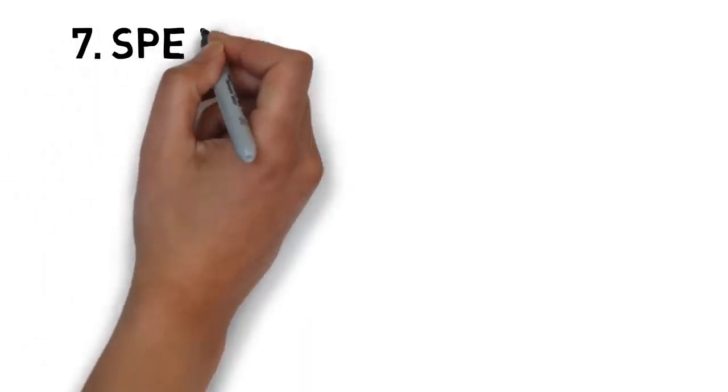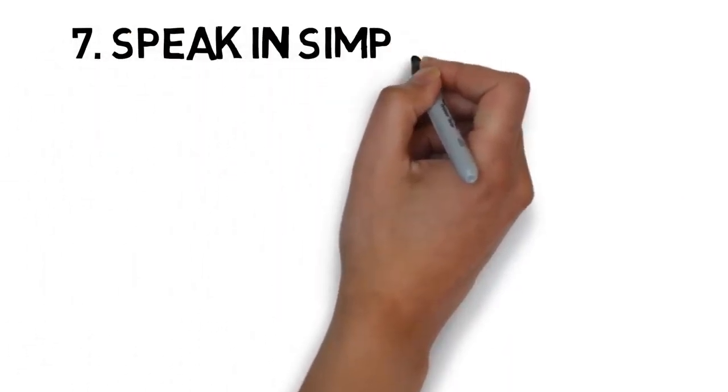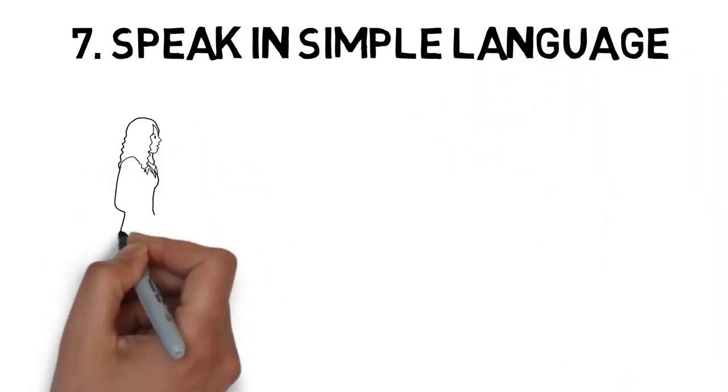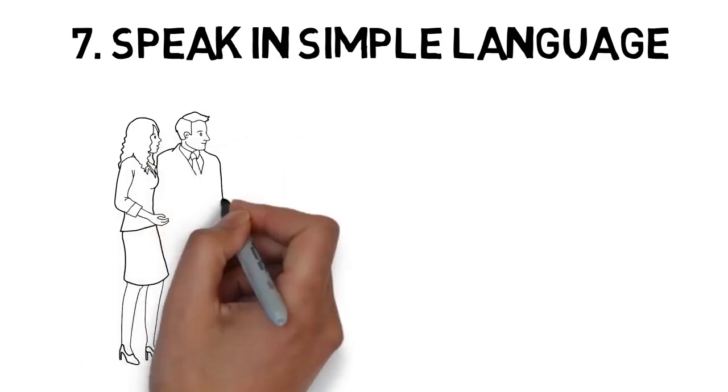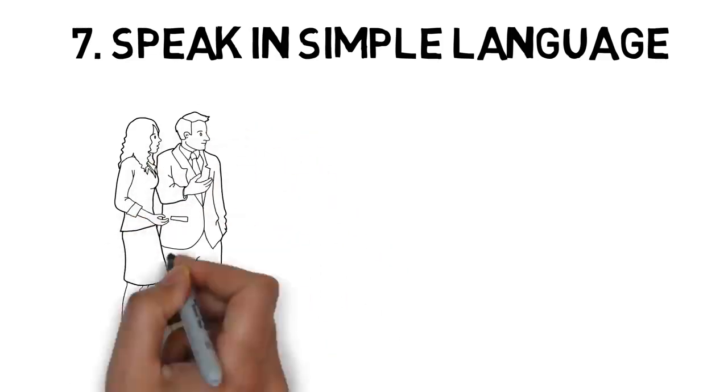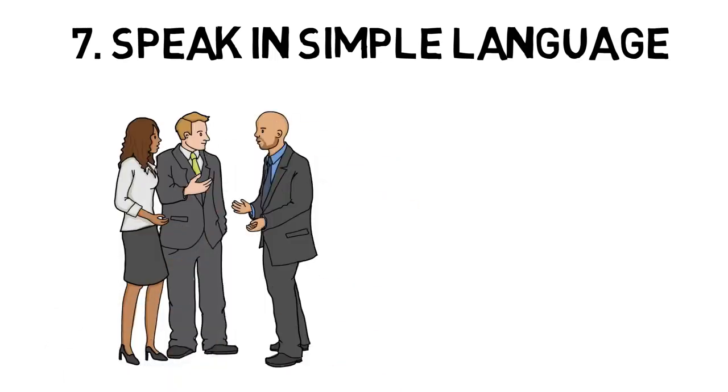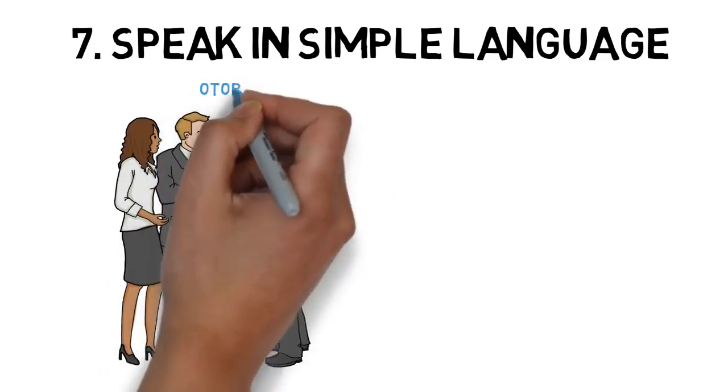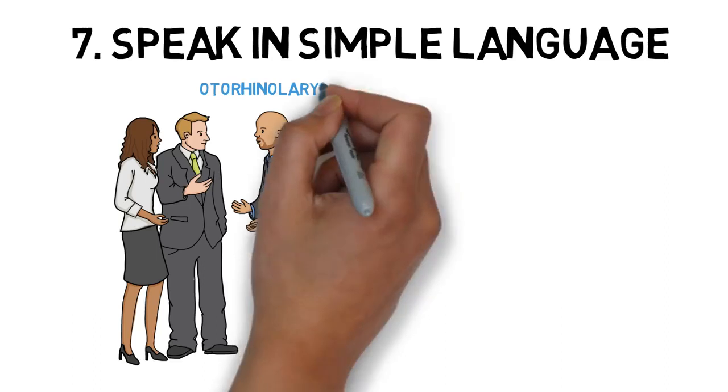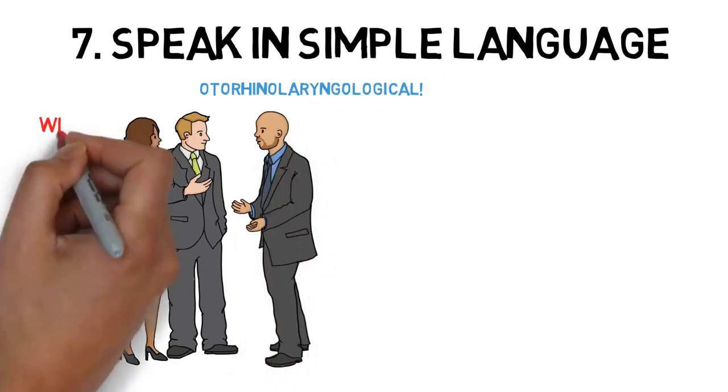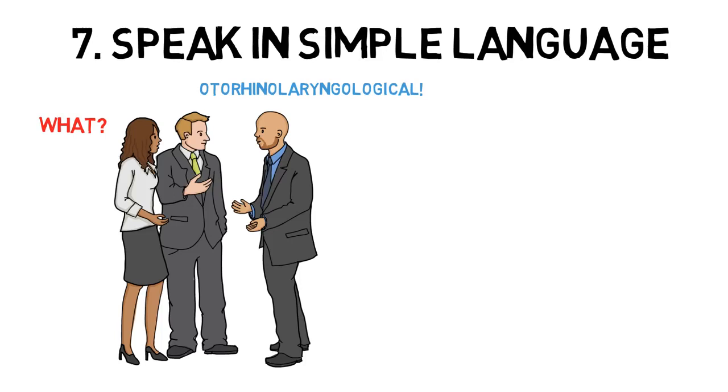Number 7: Speak in simple language. Textbooks were not meant to persuade people. They were meant to be academic references created with two very simple things in mind: precision and accuracy. But a lot of people seem to think that speaking in a complicated way is going to make them sound smart and persuading. In fact, it does the opposite. Speaking like a textbook is going to make you sound confusing, wordy, and boring.